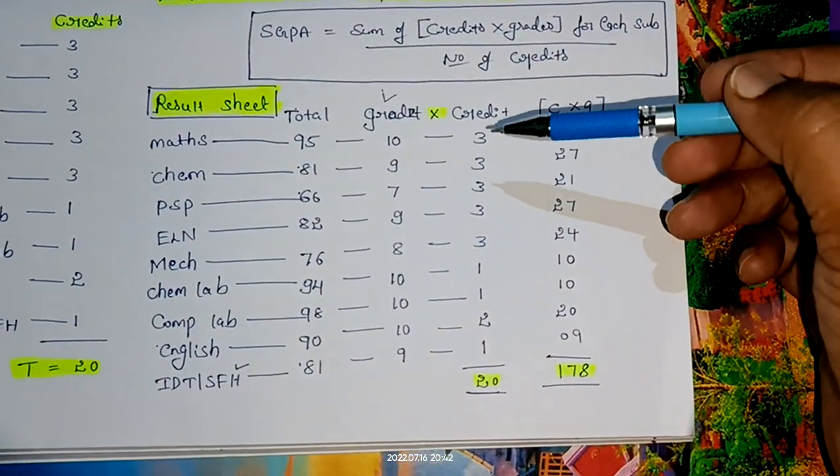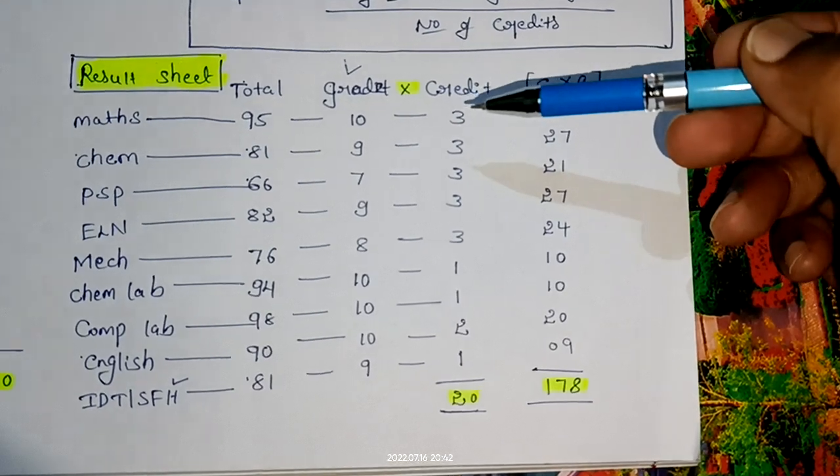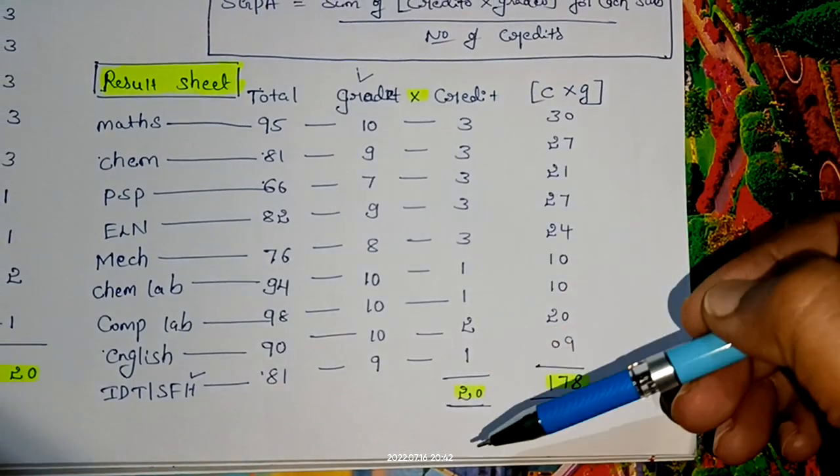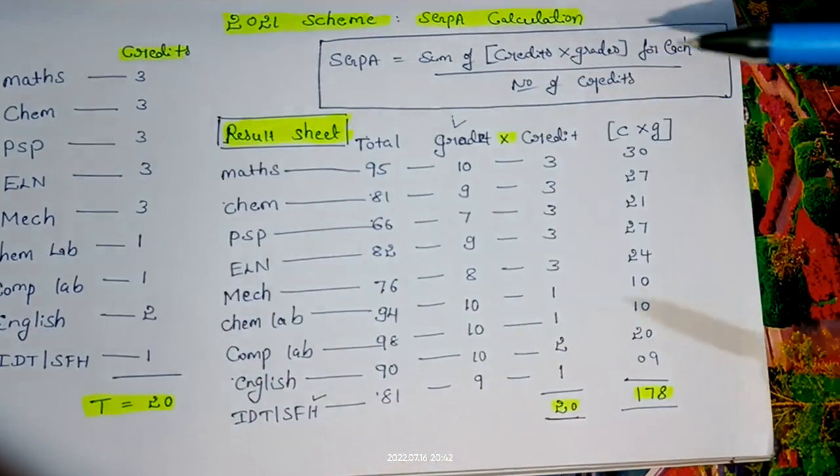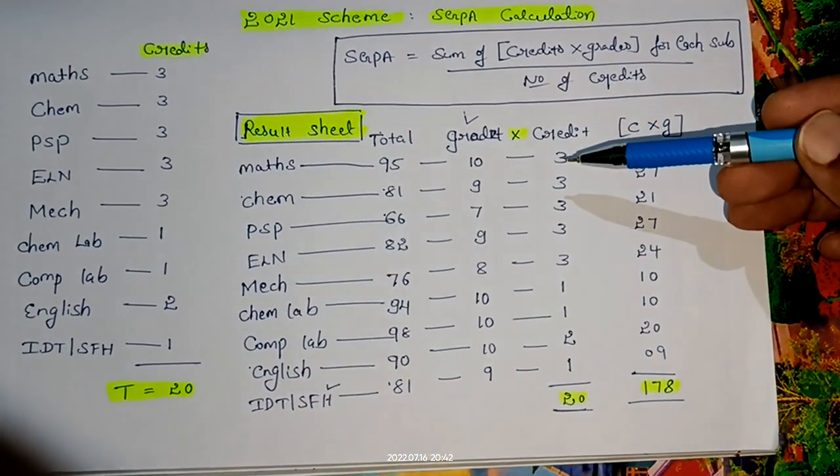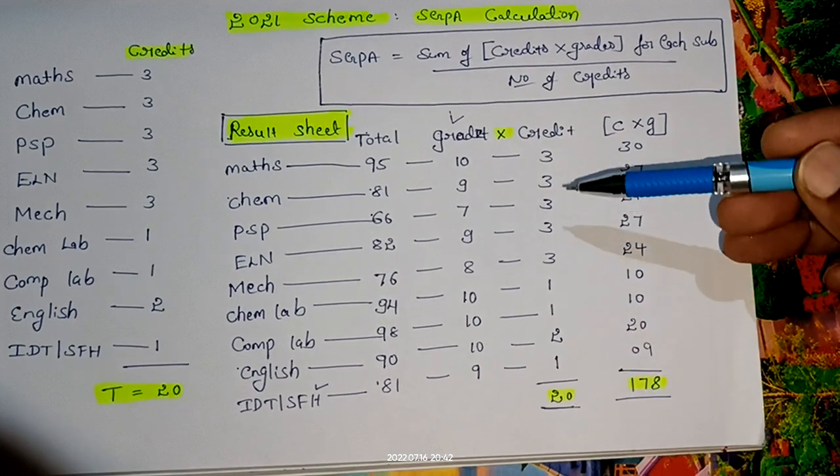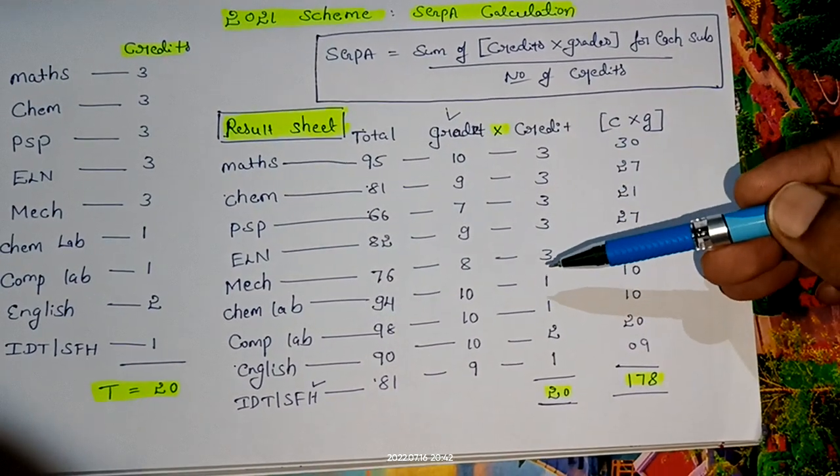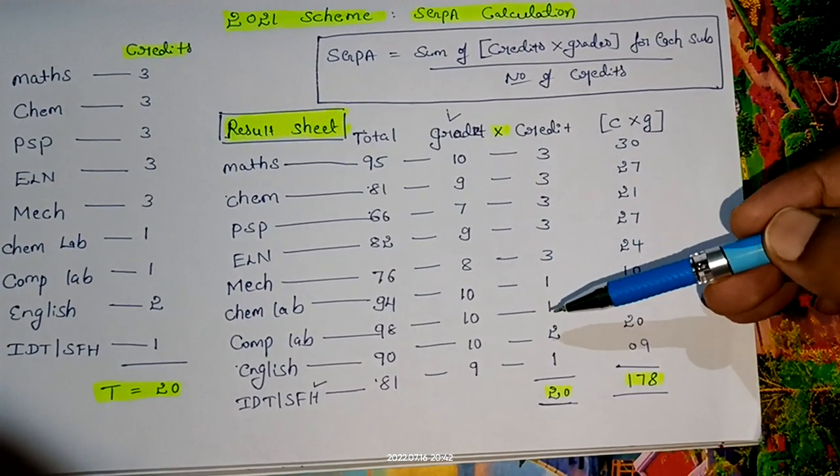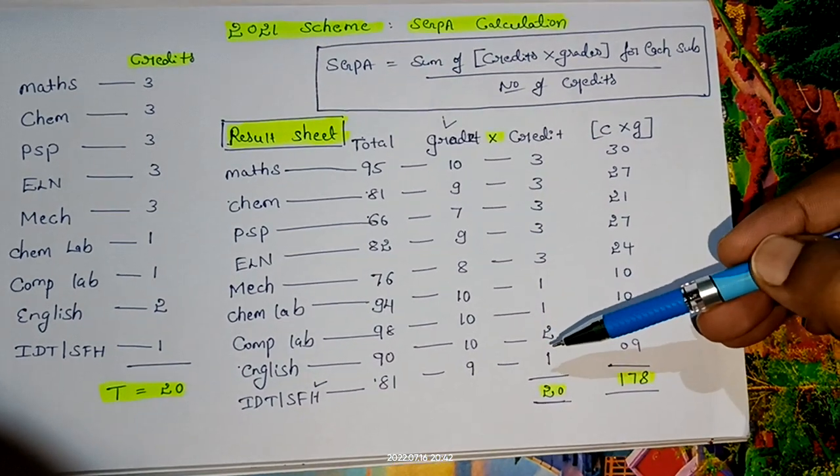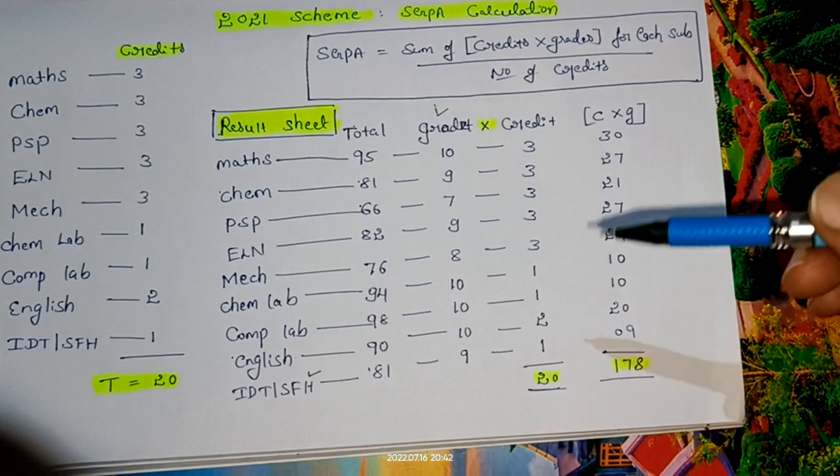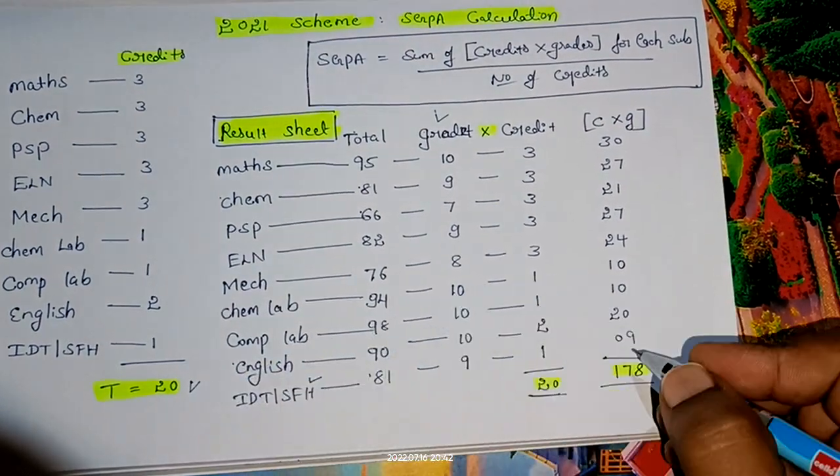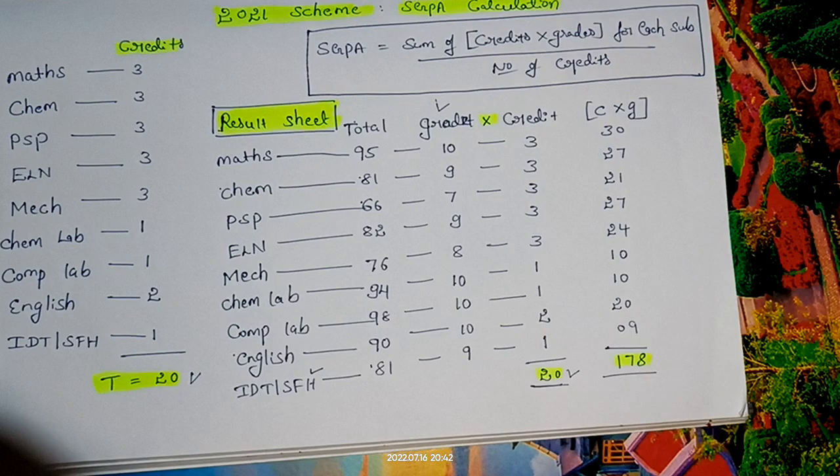Once I write the grades, you should write the credits for each subject again. Just copy and paste these credits here in front of each subject. All regular theory subjects will have 3 credits, labs will have 1 credit, English will have 2 credits, SFH will have 1 credit. The total number of credits is 20.